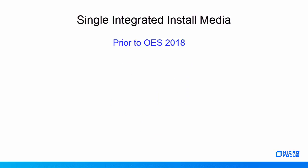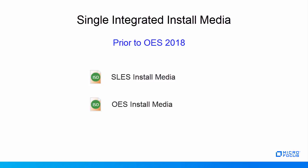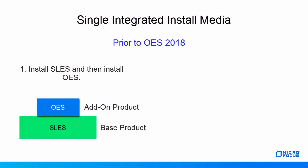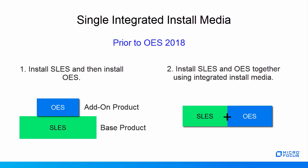Before we understand this, let's see how it was in previous OES releases. Before OES 2018, three install media or ISO files were available: separate SLES install media, separate OES install media, and SLES plus OES integrated install media. Using these install media, OES was installed in two ways: first, install SLES as a base product and then install OES as an add-on product on top of SLES; second, install SLES and OES together using integrated install media.